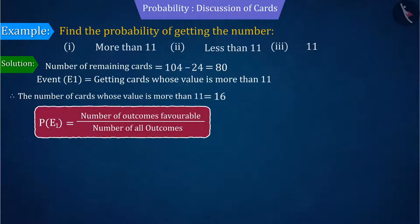That is, with the help of the probability formula, we can say that the number of outcomes favorable to the event is 16 and the number of all possible outcomes is 80. On solving this, the probability of getting cards whose value is more than 11 is 0.2.